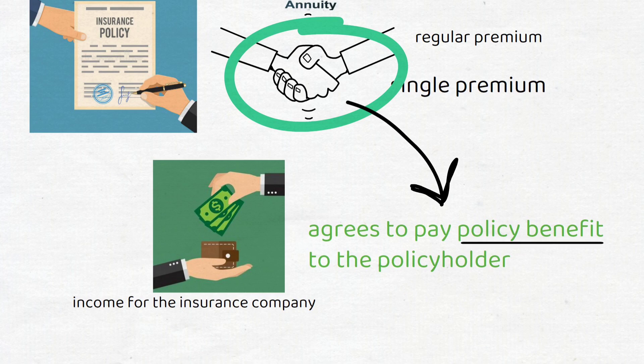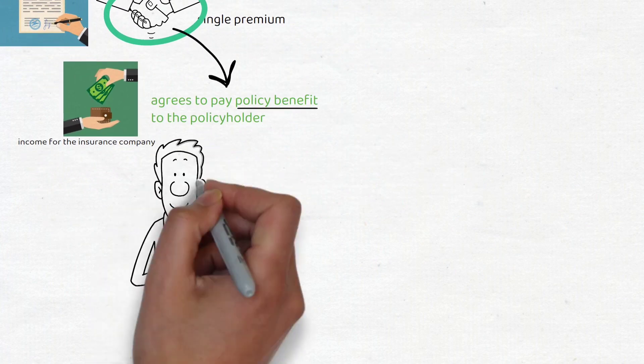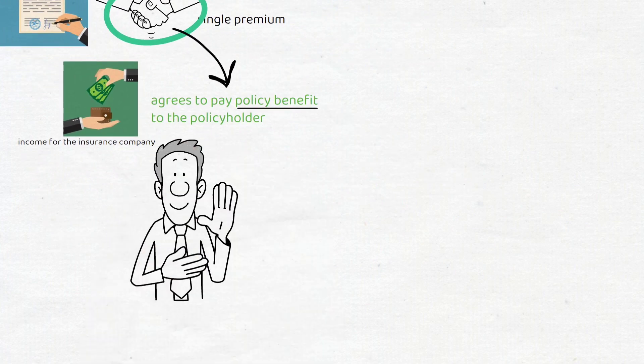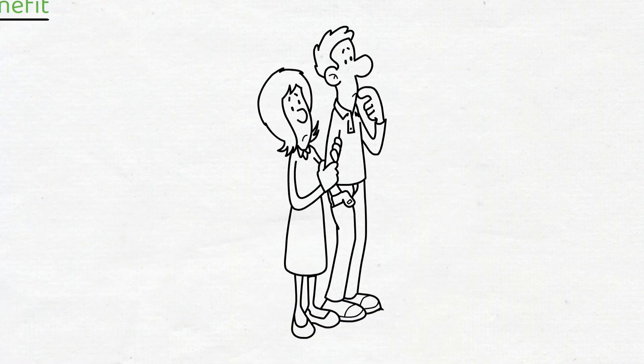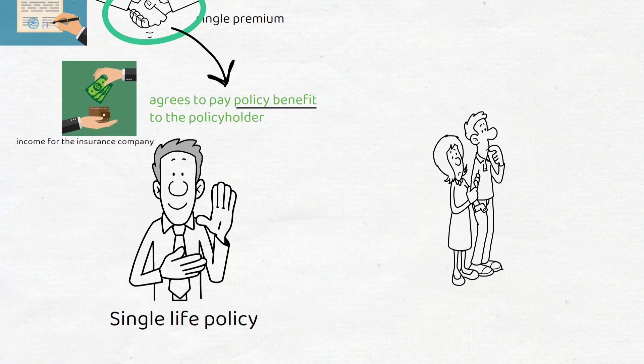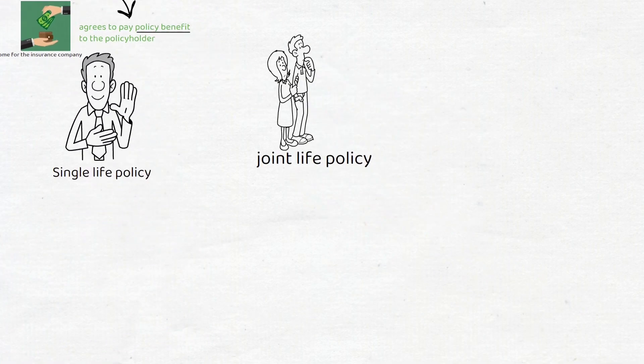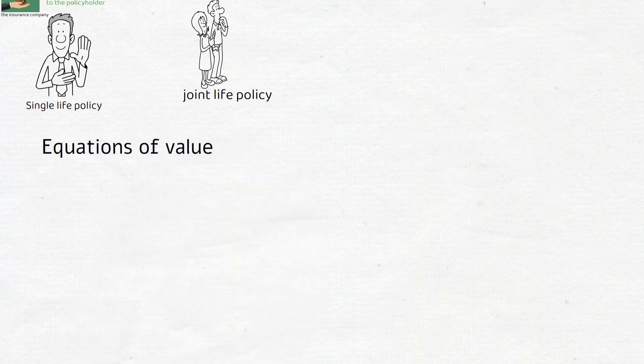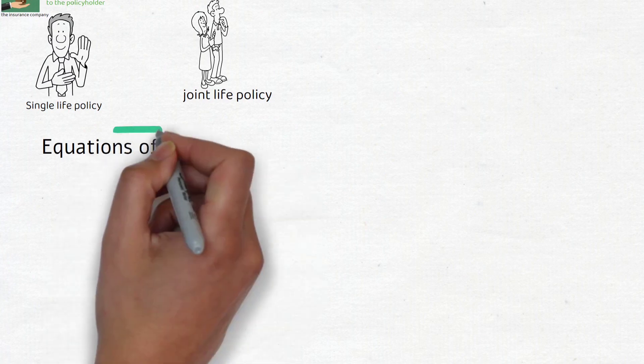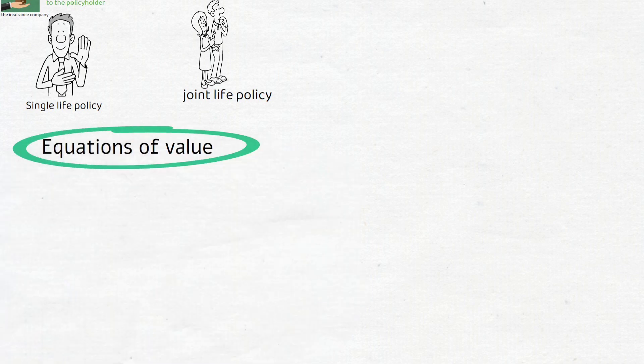The content of this subject covers contracts with a single policy holder and then later extends the theory to two policy holders. Those are called joint life contracts. And then there's also a topic of equations of value that was briefly covered in Subject 821. And then in this course, to be able to calculate the premiums for a life insurance contract, we need to use an equation of value.